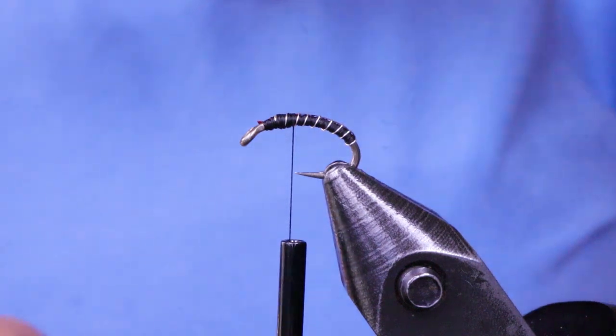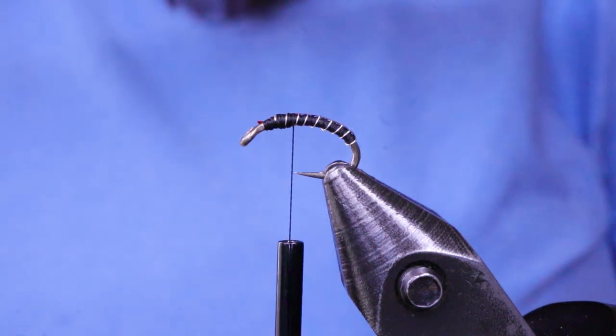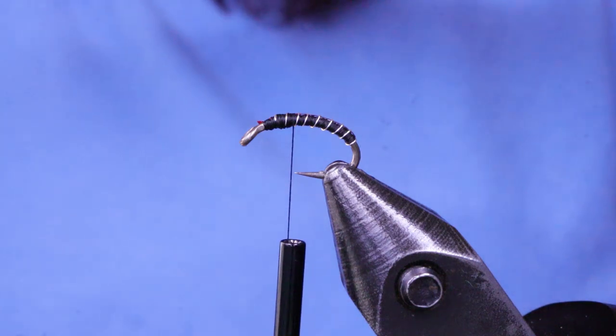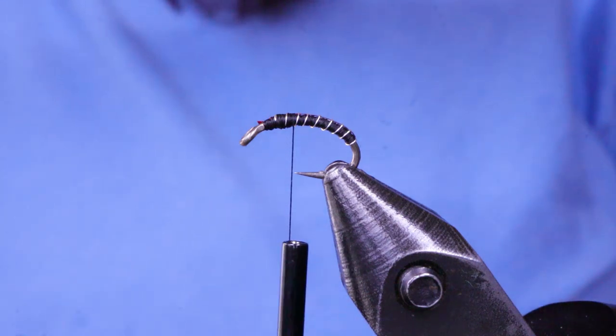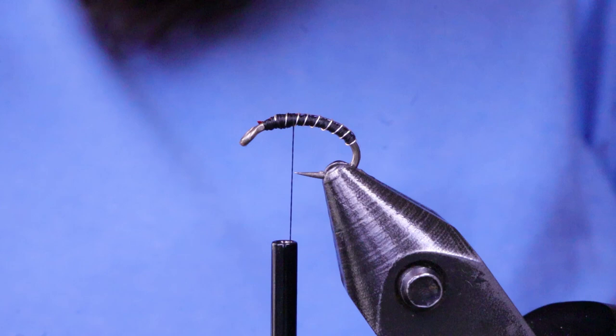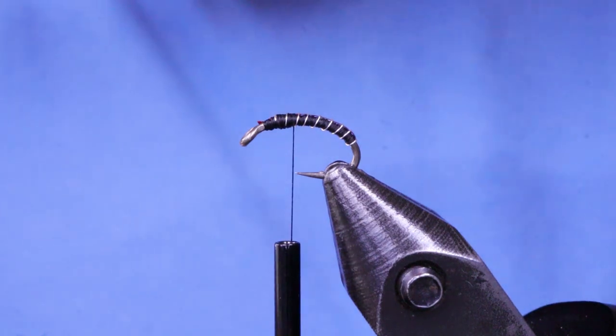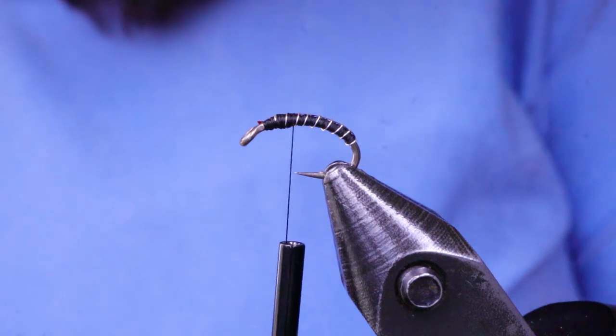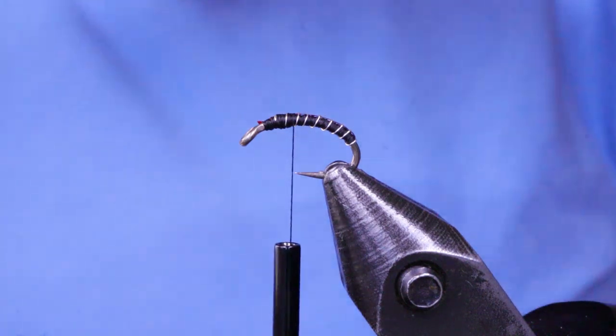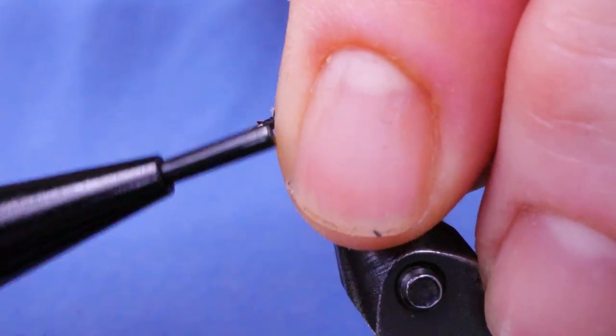So when I was watching Charlie Craven tie his jujube midge, I think he uses something called fluorofiber for the wing case and the wing buds. And he uses 12 strands. And I'm just using six of the micro glint. I've never seen the fluorofiber. I'm assuming it's thinner because I tried to use 12 and it was way too much. So I've just got six pieces of the micro glint.